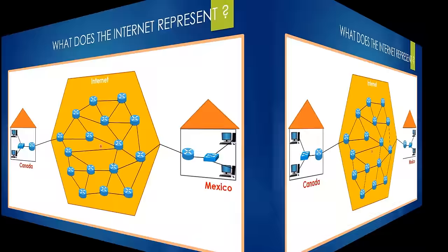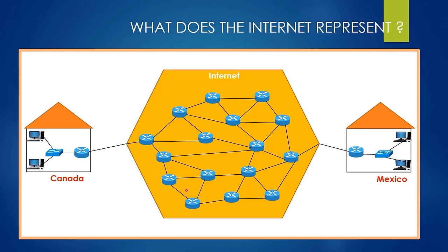Since there are many routers, load balancing is very efficient in the distributed structure. In addition to load balancing, it solves the single point of failure problem as well. For example, if this router, this router, this router, and this router are broken somehow, the internet continues to work properly — only its efficiency decreases a bit. On the other hand, when there is only one router and it breaks, the whole internet crashes down. Consistency is very important for such a huge structure like the internet.